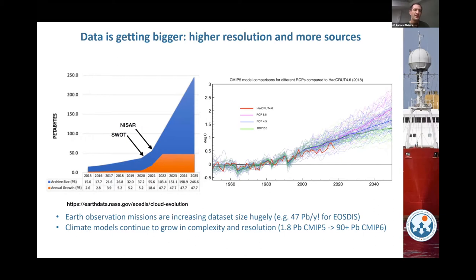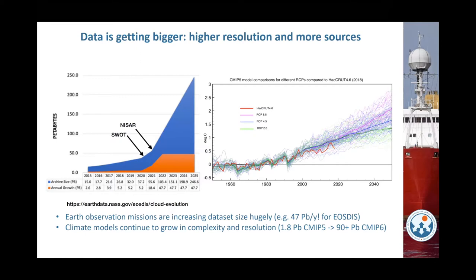As new satellites come online, such as the anticipated SWOT and NISR, the volume of data being produced is just going to grow exponentially, or at least linearly at much greater rates than previously. Similarly, when we work with large model ensembles such as the Earth system climate model ensemble — the CMIP archive — each generation of CMIP grows dramatically over the last one, both because more variables, models, and scenarios have been added, but also the resolution of the models tends to go up year on year.